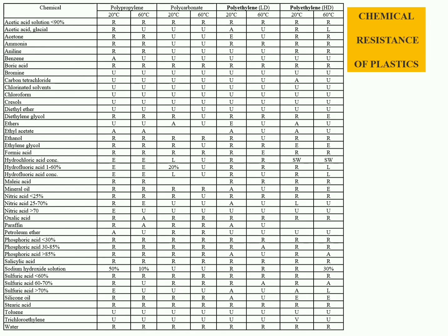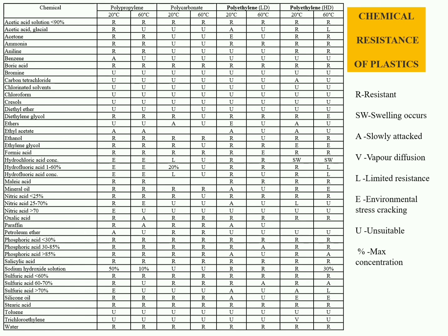The next table will tell you about the types of plastics which are resistant, unsuitable, or toxic when used with given types of chemical groups. All the information related to the resistance, swellable nature, limited resistance, environmental stress, and maximum variable concentration of the drug that should be stored in the plastic can be obtained from this table.